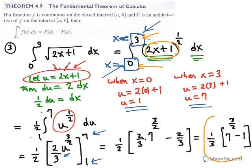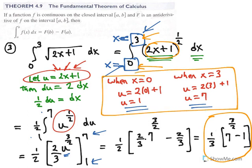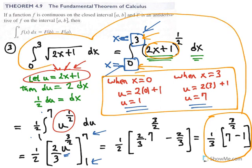This is our final answer. Because we changed the limits of integration from the x-values to the u-values, we did not have to go back to x to find the value of the definite integral. If you don't want to change the limits, I'll show you that approach in the next example — but in that case you would have to go back to x, and you must leave the limits blank when doing your change of variables, because it would be incorrect to write 0 and 3 at the substitution step.